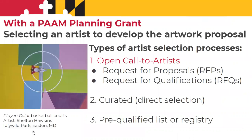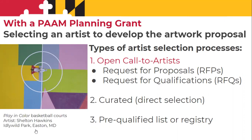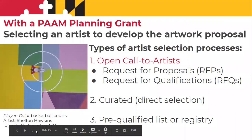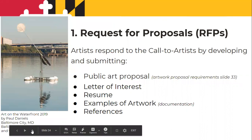Let's review the artist selection process. There are different types of processes for selecting an artist. We're going to be focusing on an open call — there are two types: the Request for Proposals (RFP) and the Request for Qualifications (RFQ). You might already have your artist selected, which we term curation or direct selection. There are also many public art programs nationwide with a pre-qualified list — you're eligible to apply to be on that list, and when a program has an opening, they will notify you of the opportunity in that community.